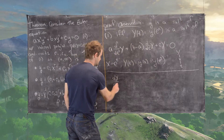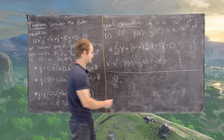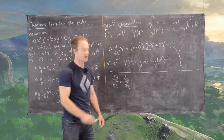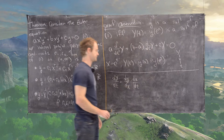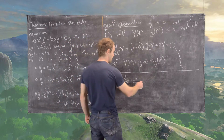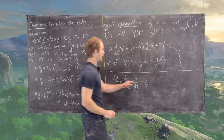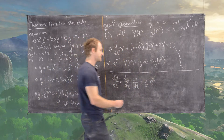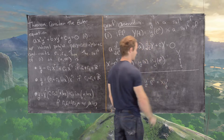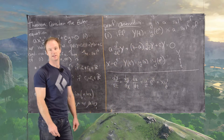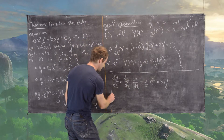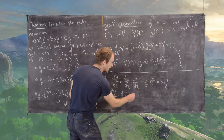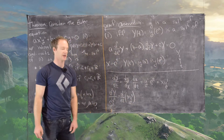We calculate dY/dt using the chain rule: dY/dt = (dy/dx)·(dx/dt) = y'·e^t. But since x = e^t, that is exactly x·y'. So the first derivative of Y with respect to t equals x·y'.